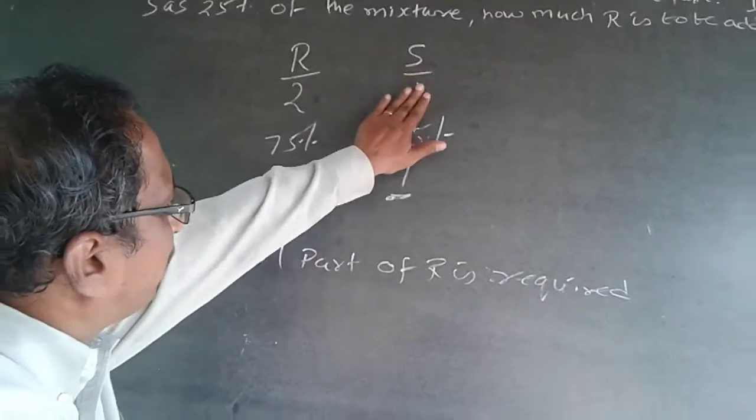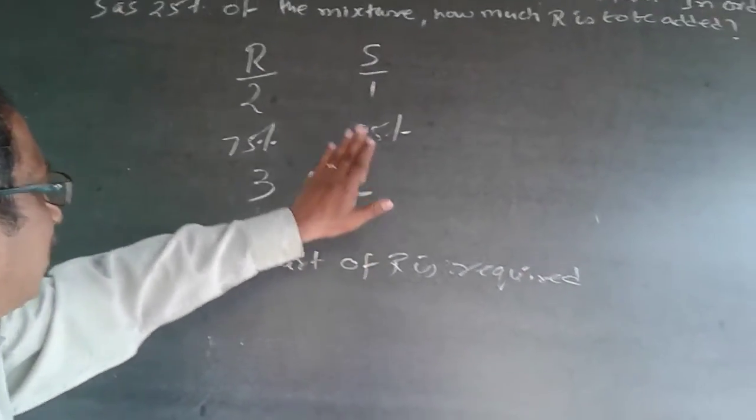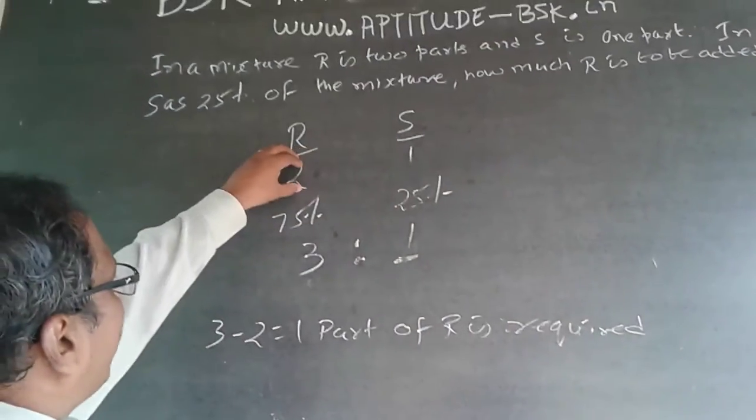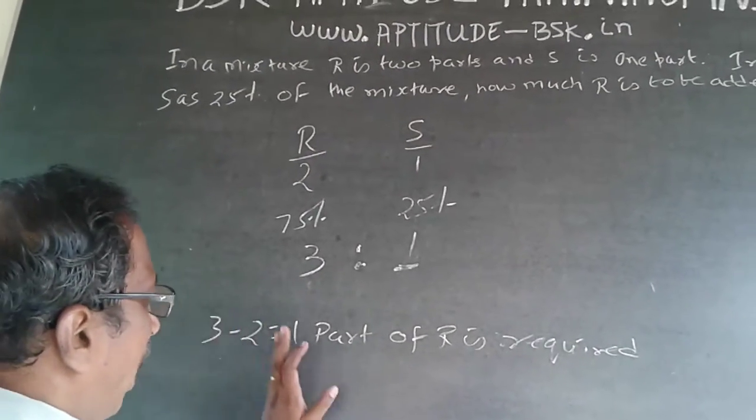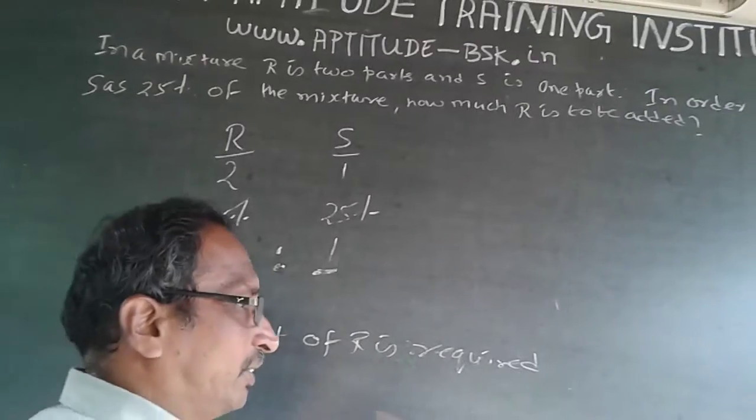And because this one has to be retained as said, this cannot be changed. Equivalent of this one, I already have 2 parts of R. So what I want is 3 parts. 3 minus 2, I require 1 part of R. As simple as this.